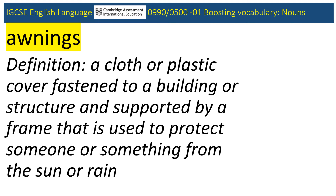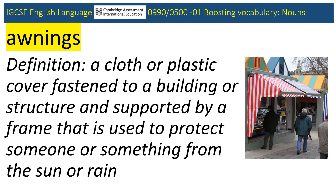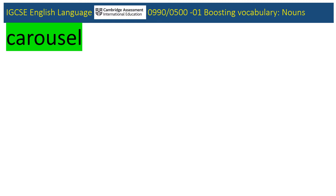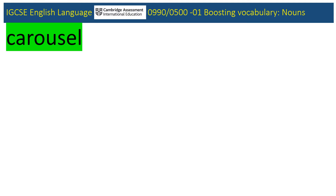Awnings is probably best defined visually. So let's move on to carousel. Here's how it was used in the March 2019 0500 paper. CIE love their imagery. From the dismal, predictable simile about the market being like a large beast, we have a carousel of sound being cooked up with hands. The narrator has auditioned to become the drummer in a small jazz band, who would be playing a concert within a bandstand of a local park. So how might you define carousel here?